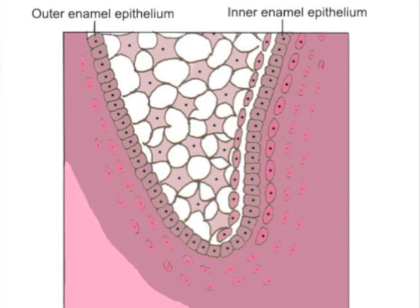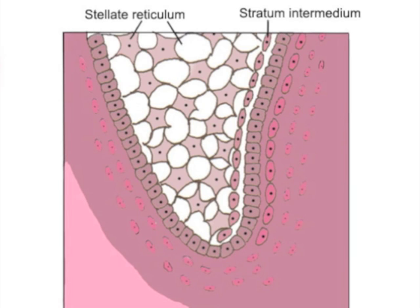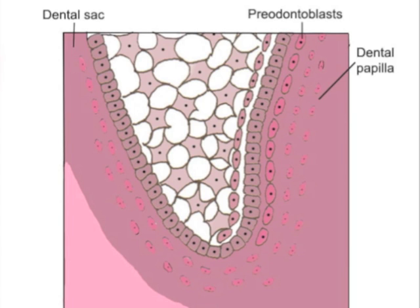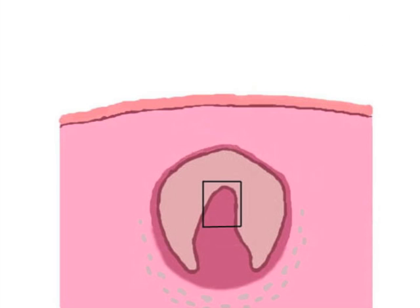The outer and inner enamel epithelium, the stellate reticulum and stratum intermedium, the dental sac, pre-odontoblasts, and the dental papilla are all visible in this magnified view.